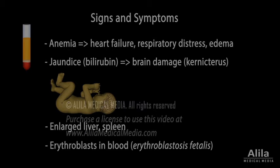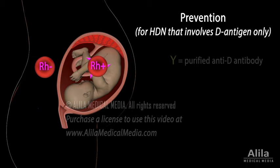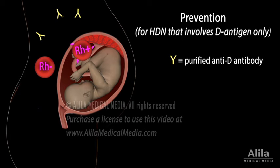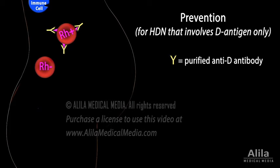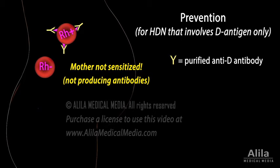HDN that involves D antigen can now be effectively prevented with anti-D antibody. It is given to RH negative mothers during and soon after the first mismatch pregnancy. The antibody binds to fetal blood cells that leak into the mother's blood, either destroying them or hiding them from the mother's immune system, thus pre-empting the mother's immune response.